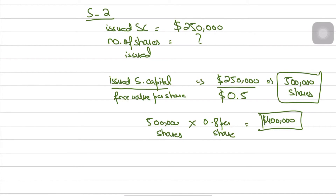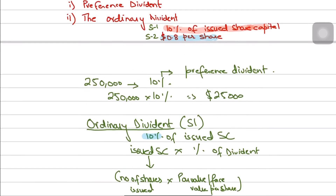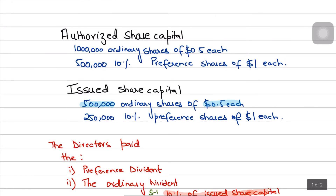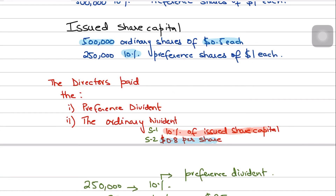First, the preference dividend is always given as a percentage next to the number of preference shares in the question. That percentage is always the preference dividend rate. You include it in finance cost if the preference shares are redeemable.